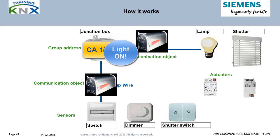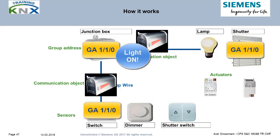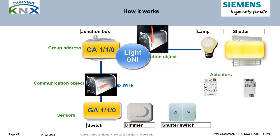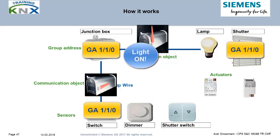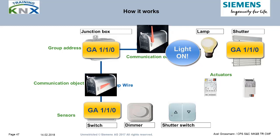All devices will at first receive the telegram. Then they compare the destination group address to their own address table. If they find a matching address, the received information will be passed into the corresponding target communication object. The receiving flag is put up. This causes the BCU to convey this information to the application module and application program, which will then execute the received command.